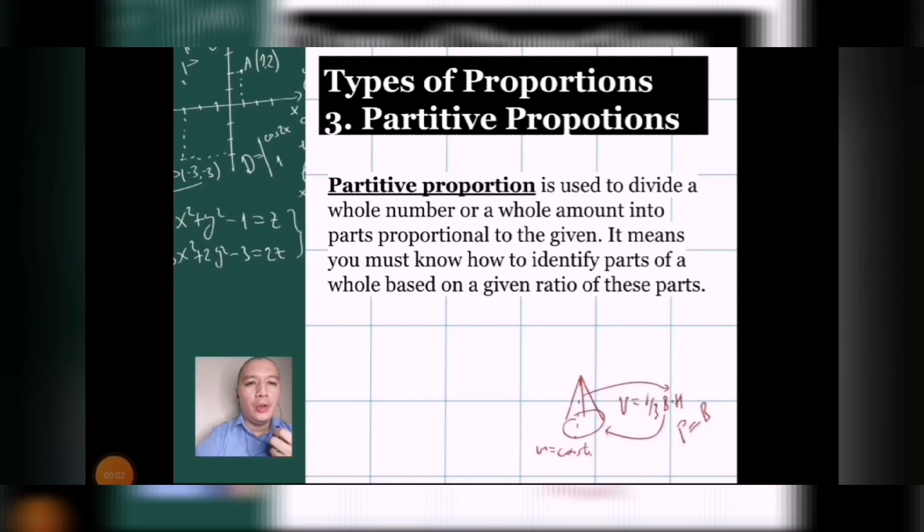Our last example or type of proportion is what we call a partitive proportion. Partitive proportion is used to divide a whole number or a whole amount into parts proportional to the given. It means you must know how to identify the parts of a whole based on the given ratio of these parts. Now, for partitive proportions, this is an example of proportion that is easily solved without the aid of cross multiplications or inner and outer approach. However, you can still use the same approaches in solving it, but it will be easier as you just need to determine what is the entire, the whole amount, and then the proportions that would divide it.